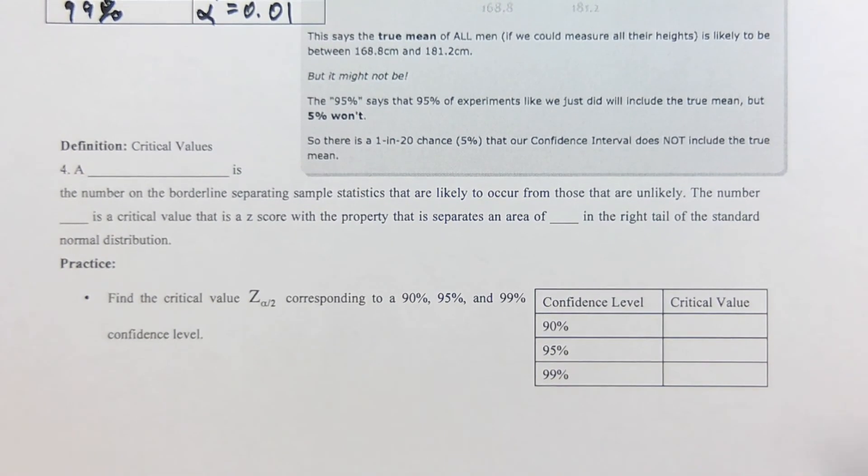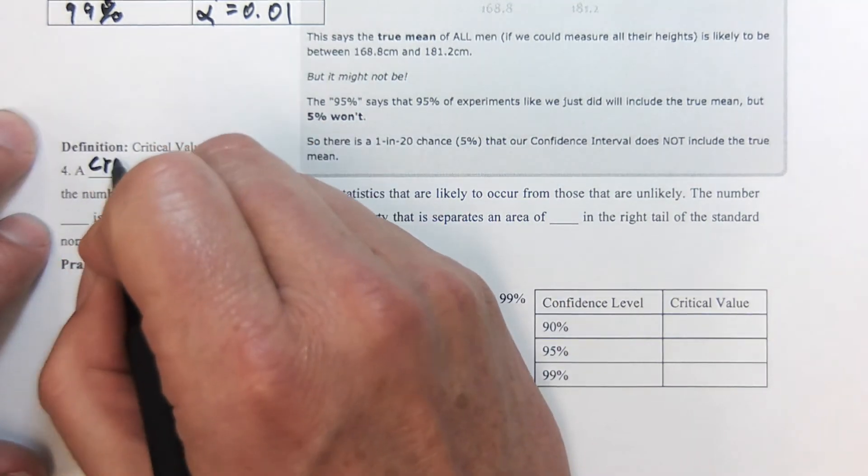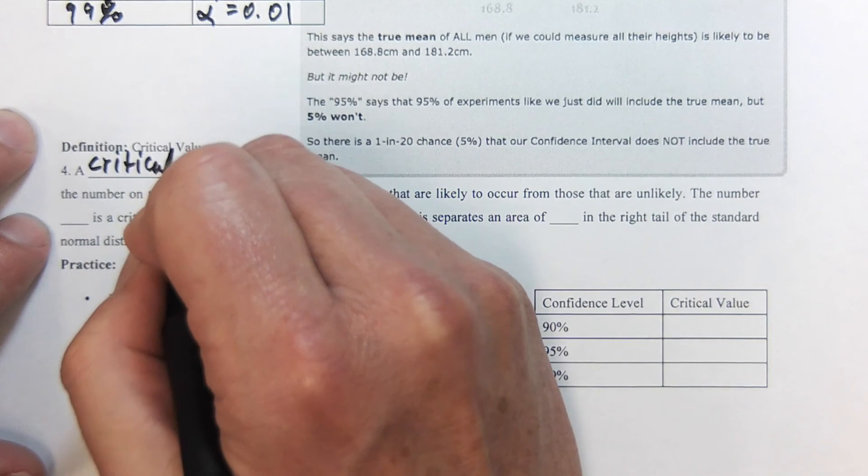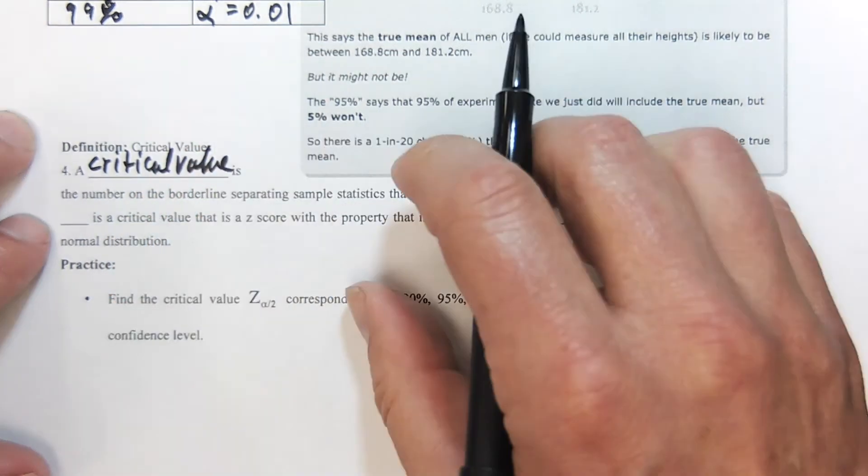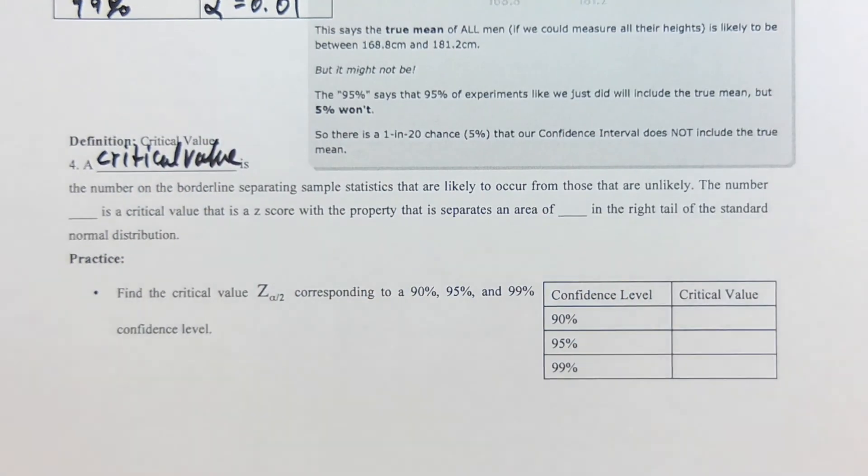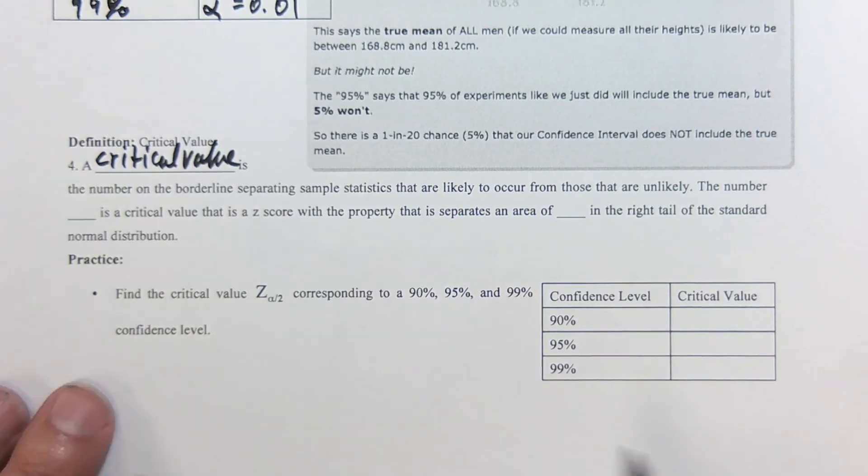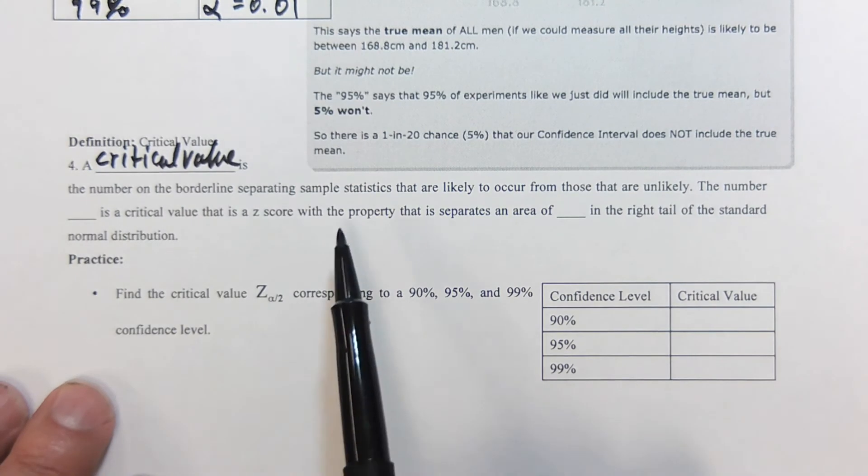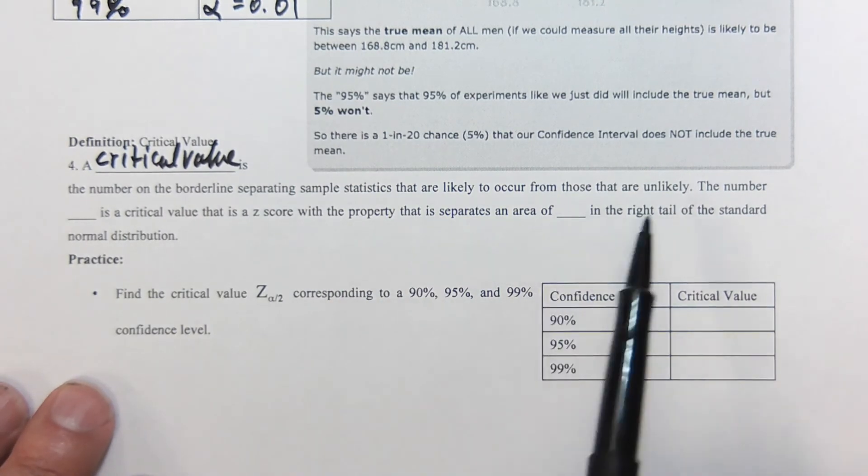Next up, we're going to have a definition. Our definition is the critical value and that's what we're going to work on finding here. Critical value—it's our boundary, what we're comfortable with to guarantee a 95% or whatever. The critical value is the number of the borderline separating sample statistics that are likely to occur from those that are unlikely.